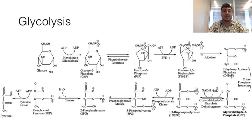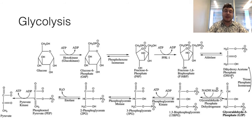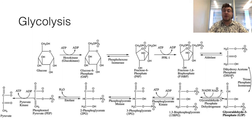Now that glycolysis is complete, we have oxidized glucose and created two pyruvate molecules. A total of four ATP were generated by the payoff phase after an investment of two ATP in the investment phase, giving a net gain of two ATP from the pathway. Also, two NADH molecules have been made, which can create ATP via oxidative phosphorylation or proceed to many other metabolic pathways.